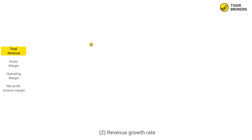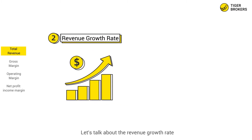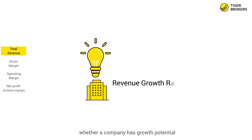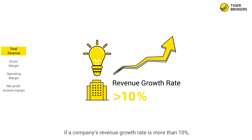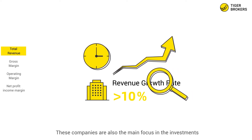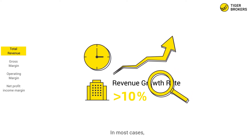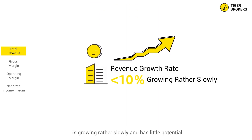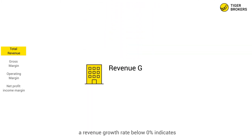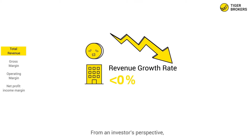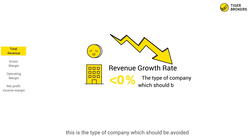Revenue growth rate can help us determine whether a company has growth potential. Generally speaking, if a company's revenue growth rate is more than 10 percent, we can conclude that the company has great growth potential. A revenue growth rate below 10 percent shows that the company is growing rather slowly. A revenue growth rate below zero percent indicates that a company is in decline — from an investor's perspective, this is the type of company which should be avoided.